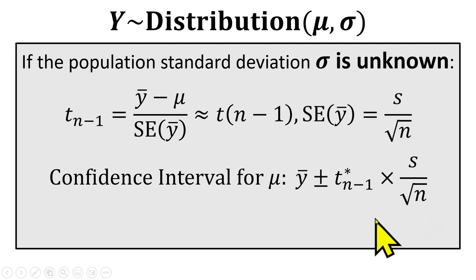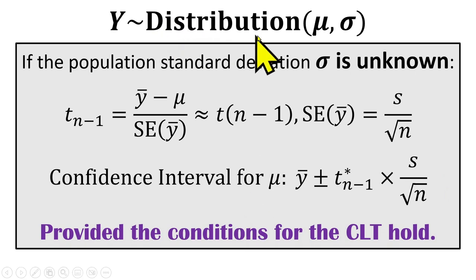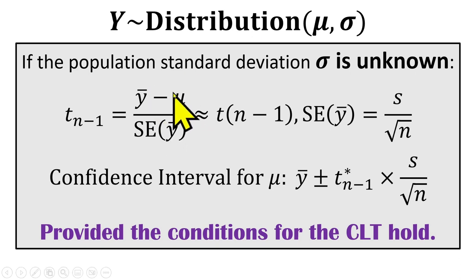Conceptually, everything else is the same. As before, certain conditions must hold. The conditions for the central limit theorem must hold if the distribution is either unknown or not normal. So again, as long as the observations are independent of each other and the sample size is big enough, then this will be a good approximation.